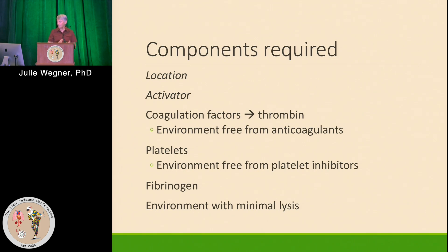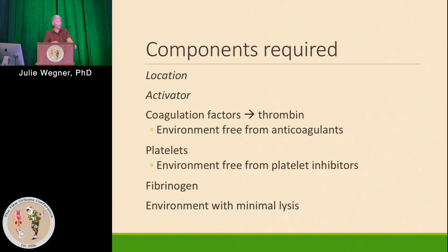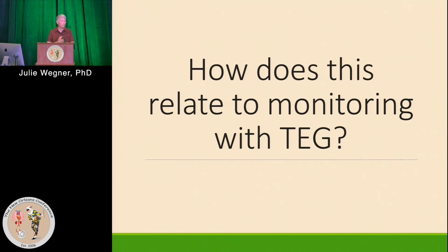The components are: location and an activator, which is typically tissue factor — those two are different because they're things we can't measure outside the body. Then there are the coagulation factors required for thrombin generation, an environment free of anticoagulants, something that blocks thrombin, platelets, an environment free from platelet inhibitors, fibrinogen, and an environment with minimal lysis.